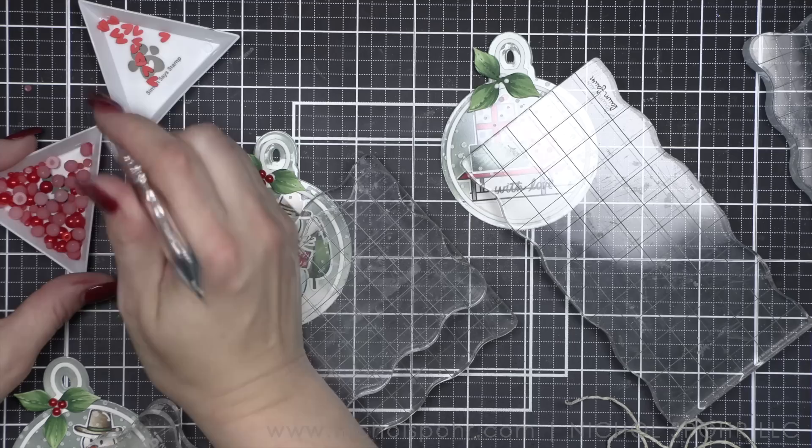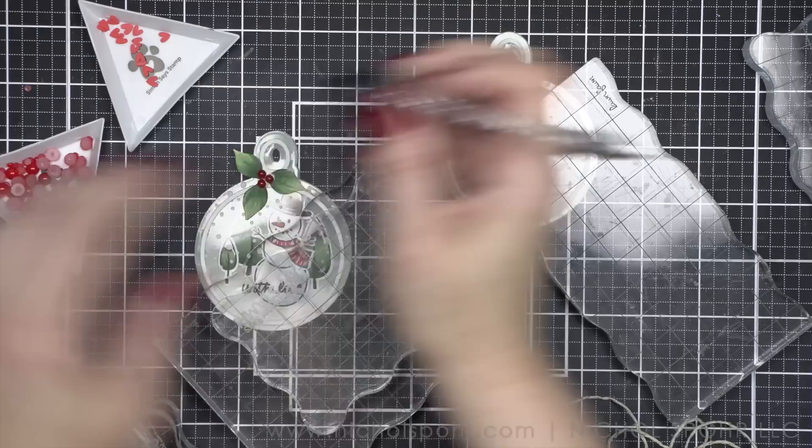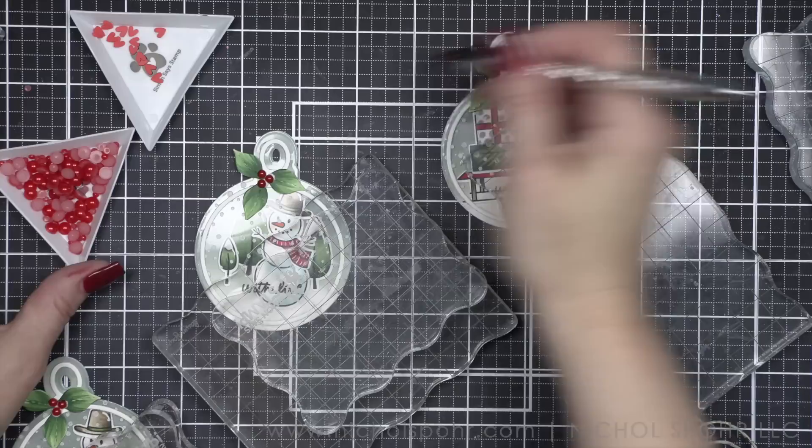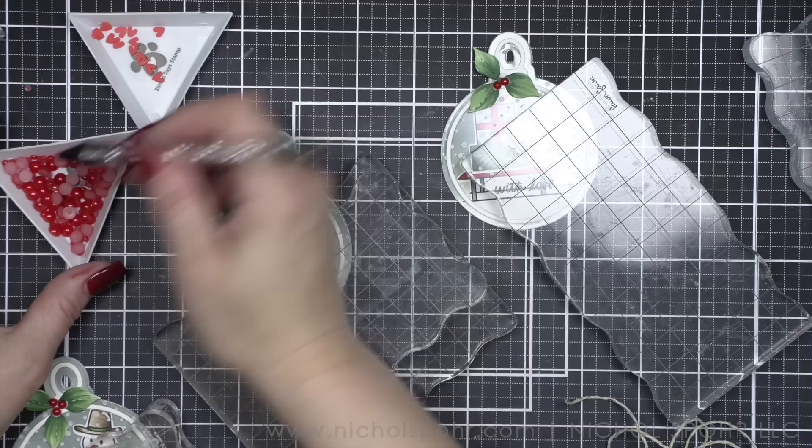You could use the coordinating die and die cut your own, but it is super teeny tiny, and I like a little dimensional embellishment, if at all possible. So we're going to pick up three of those, pop them in the center, and I love it. I think it's so cute.